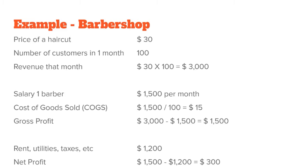But let's say the customer gets a haircut right now and only pays us one month later. In that case, revenue is still $30 because we earned it now, but cash is zero until we receive it next month. In the case of our barbershop with 100 customers at $30 each, revenue is calculated as price times number of customers: 30 × 100 = $3,000.